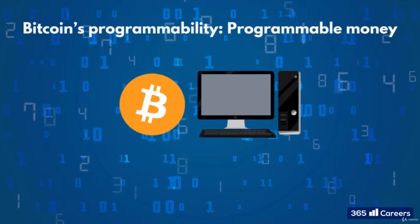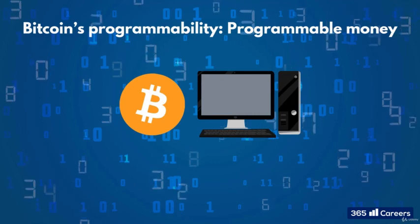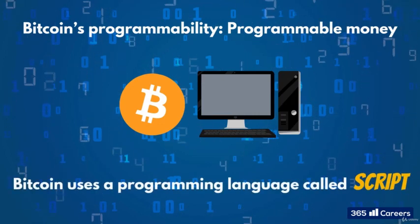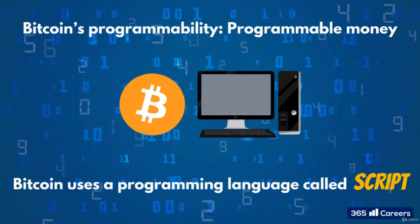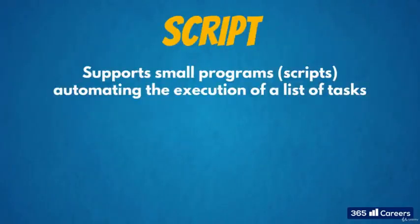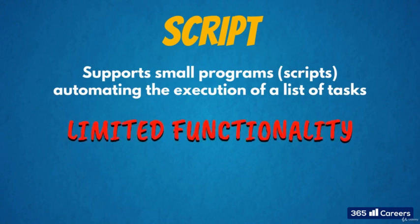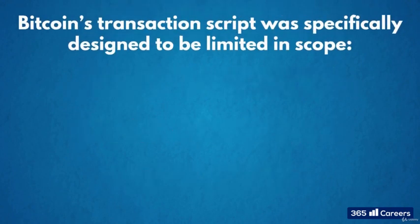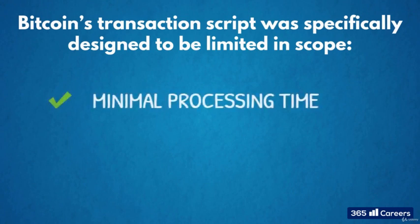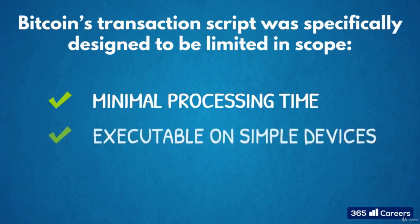Let's have a look at the programmability aspect of Bitcoin. Some cryptocurrencies are referred to as programmable money. Bitcoin is indeed a programmable digital currency — it uses a programming language called Script when structuring and processing transactions. Script supports small programs called scripts that automate the execution of a list of tasks or commands. Script is a high-level programming language with limited functionality, and it is domain-specific, meaning it is specialized to its application domain. Bitcoin's transaction script was specifically designed to be limited in scope, in order to require minimal processing and to be executable even on very simple devices.